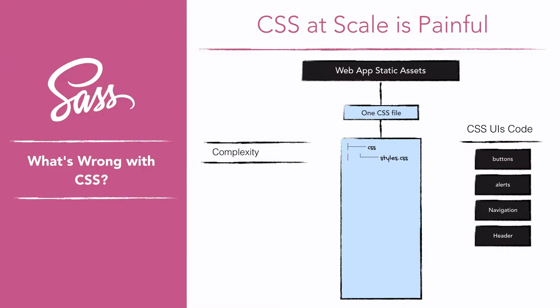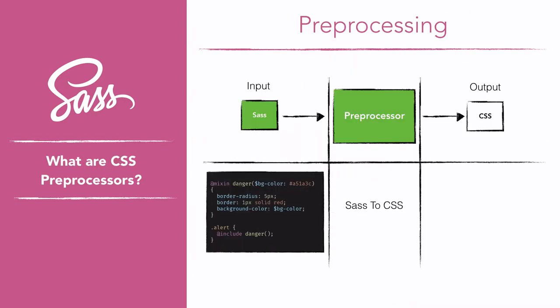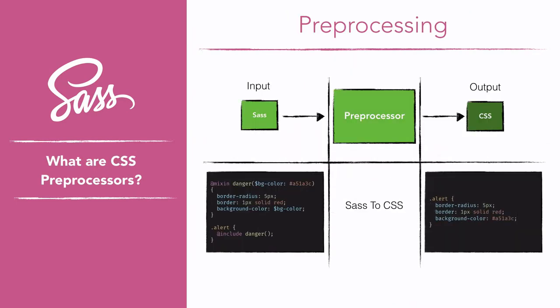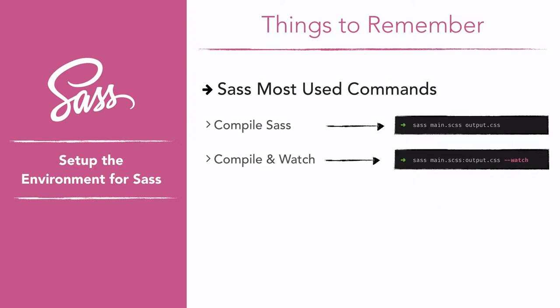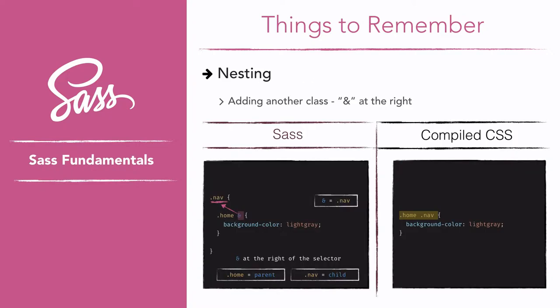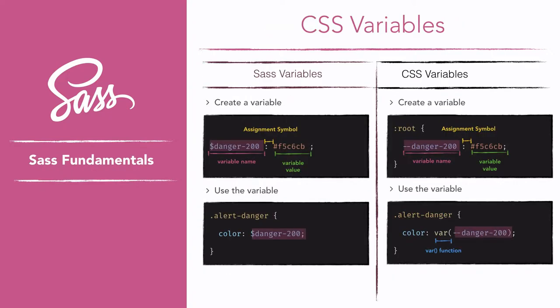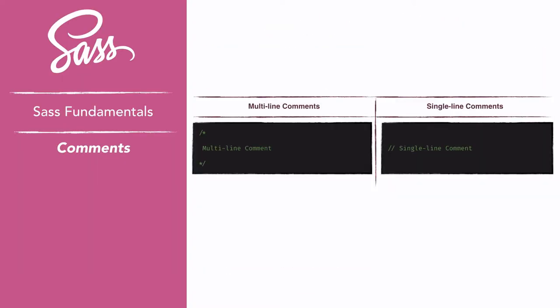We'll start by understanding why we should move from CSS to a preprocessor like Sass, and we'll go through the main goal of preprocessing CSS. We'll also set up an environment that allows us to use Sass on our machine. Then we'll go through each Sass fundamental, including Nesting Selectors, Variables, and Comments.